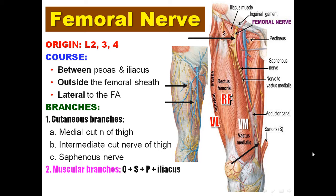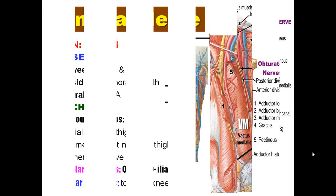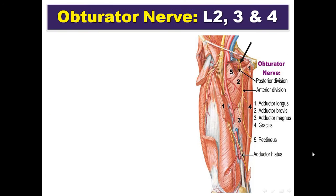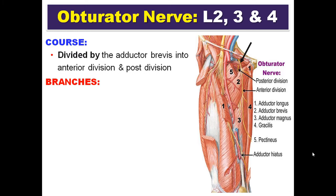The femoral nerve also gives articular branches to the hip joint and knee joint. Regarding the obturator nerve, it arises from the anterior divisions of L2, L3, and L4. It is divided by the adductor brevis into an anterior division and a posterior division.